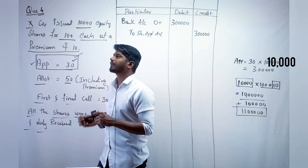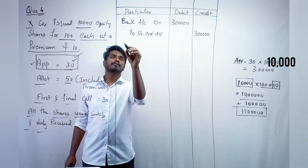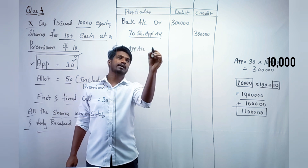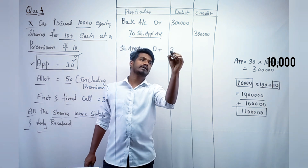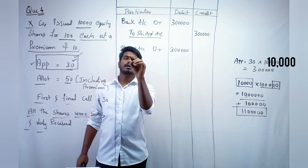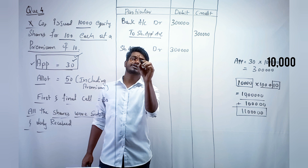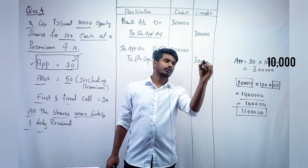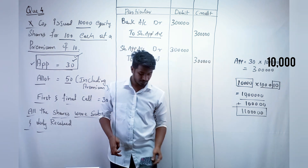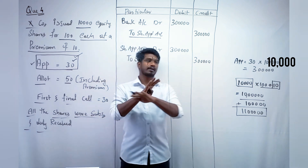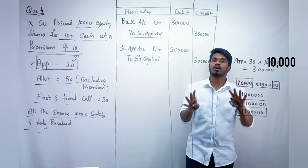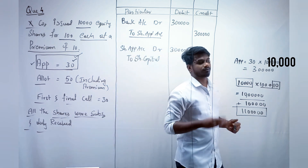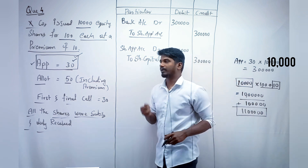The second entry is the reverse — share application account debit for 3 lakh rupees, credited to share capital for 3 lakh rupees. If you learn these two entries, you will easily learn all six entries because the remaining ones are essentially copy-paste. Narration: being application money transferred to share capital.